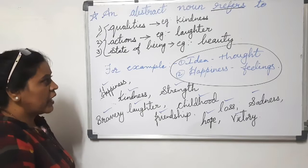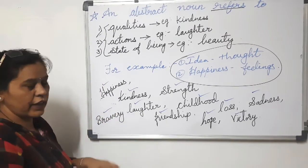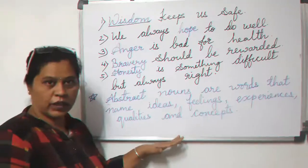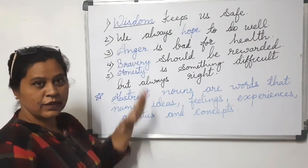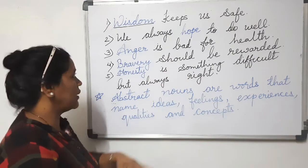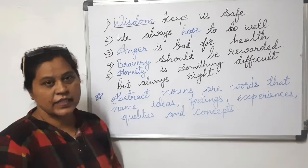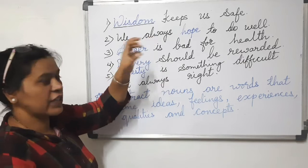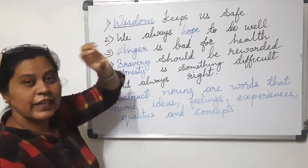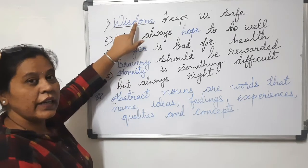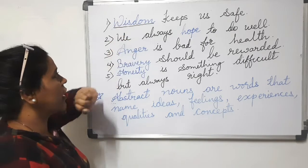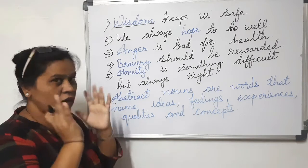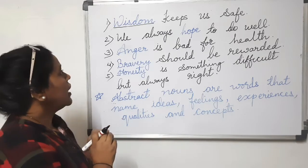Now I will explain with sentences so you can identify the abstract noun in each. First sentence: 'Wisdom keeps us safe.' Wisdom is a special name — it describes the quality of a person. Wisdom is an abstract noun because it describes a quality which we cannot touch, smell, or hear — we can only feel it.